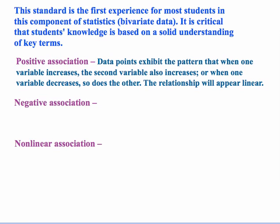A positive association exists when data points exhibit the pattern that when one variable increases, the second variable also increases — or when one variable decreases, so does the other. Because of this association, the relationship will appear linear.